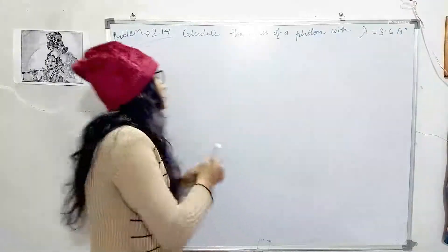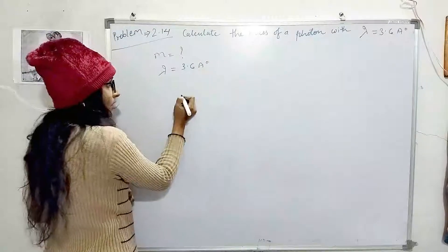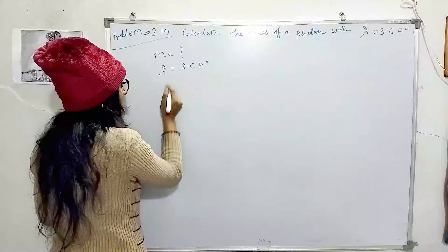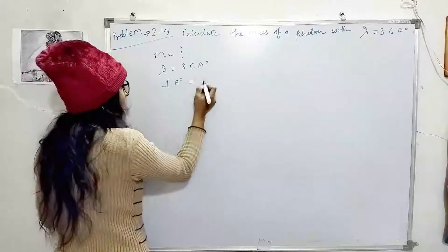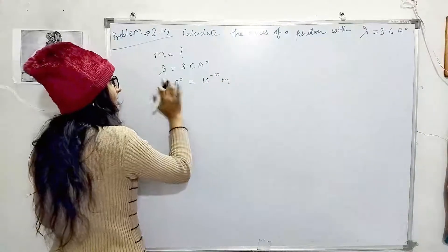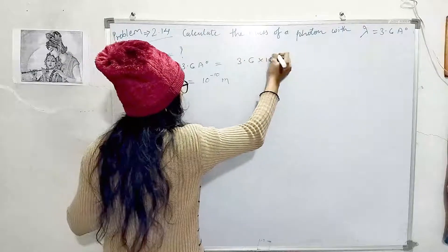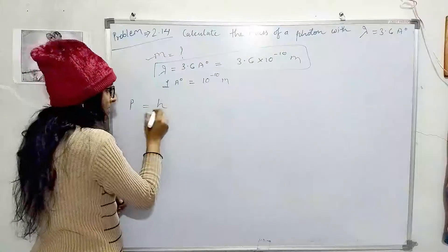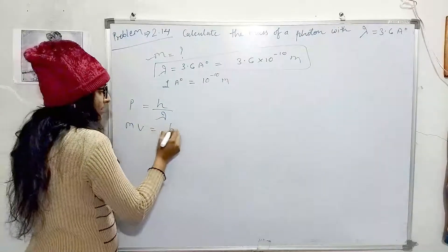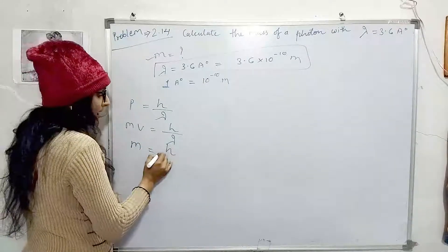Problem 2.14 (NCERT): Calculate the mass of a photon. We are given the wavelength as 3.6 angstrom. Converting to meters: 1 angstrom = 10⁻¹⁰ meter, so lambda = 3.6 × 10⁻¹⁰ meter. The relationship is: momentum = mass × velocity = h/lambda, so mass = h/(lambda × v).